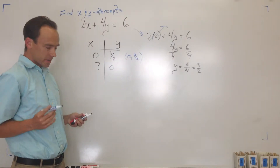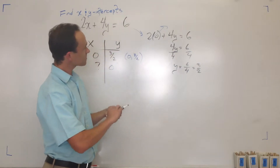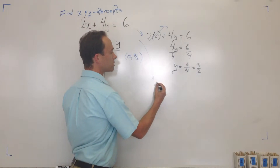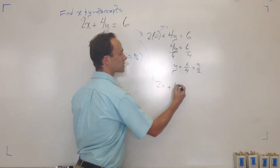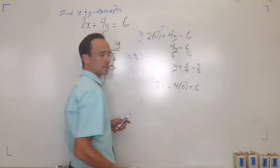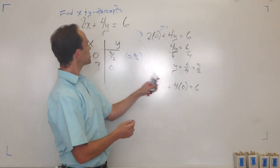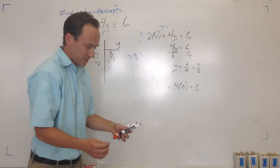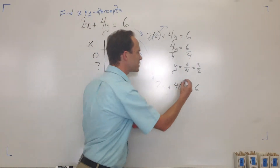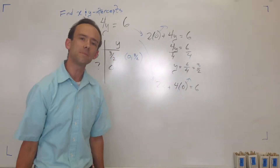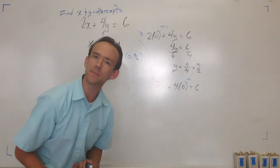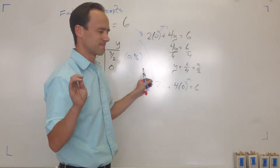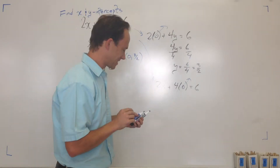Now let's go get our x-intercept. I'm going to write a new equation: 2x plus 4 times zero equals 6. I'm just making y zero, that's all. Four times zero is zero, so that term disappears.